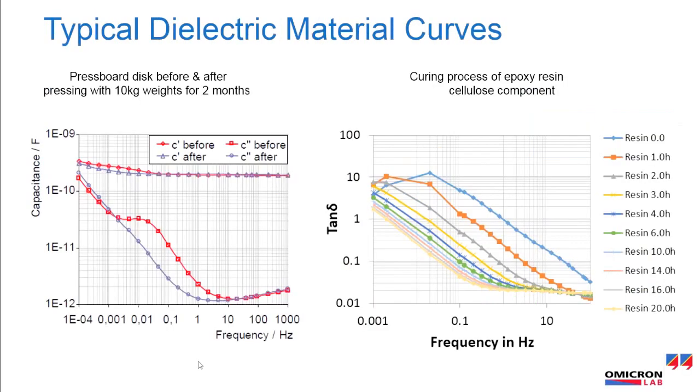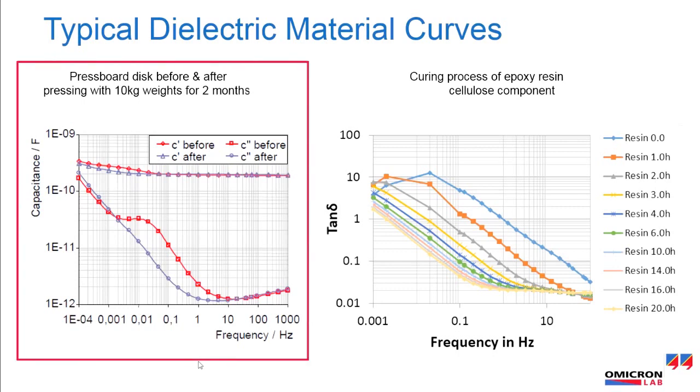These two curves also underline why it is important to measure over a wide frequency range. As can be seen in the first chart, it is often not enough only to measure the tangent delta.